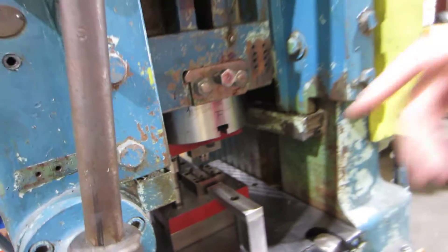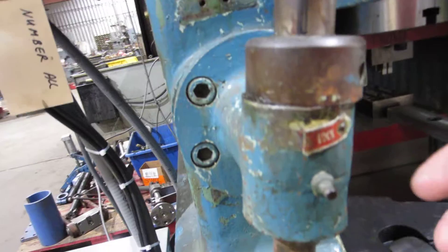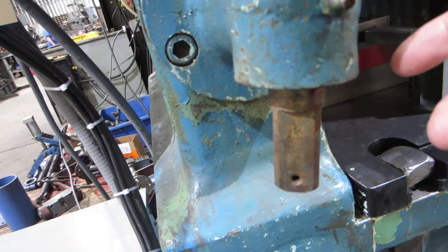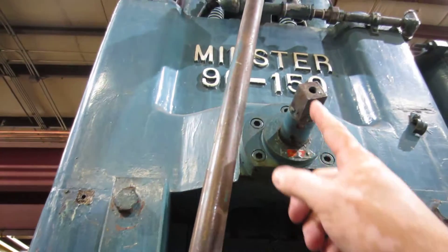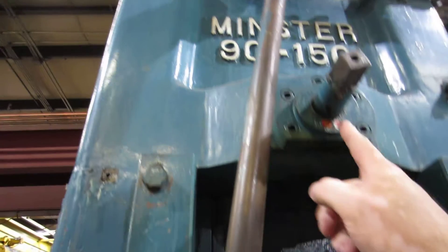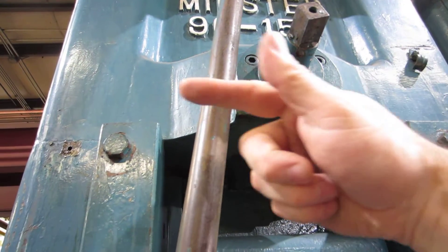Over here is your ram lock. So right here, if you turn it this way, it's going to be locked. And this has got to be unlocked in order to make your shot height adjustment. Your shot height adjustment's over here. You get a socket on there. You turn it this way, it's going to go up. You turn it that way, it's going to go down. Righty tighty, lefty loosey.